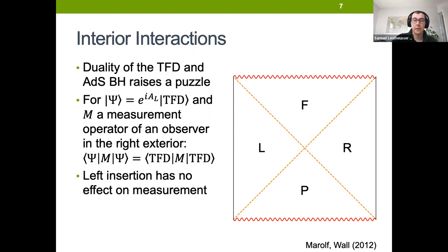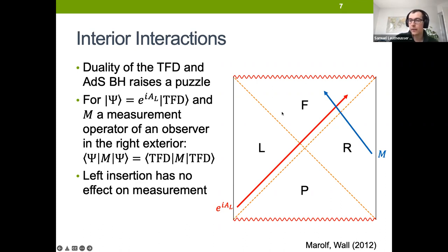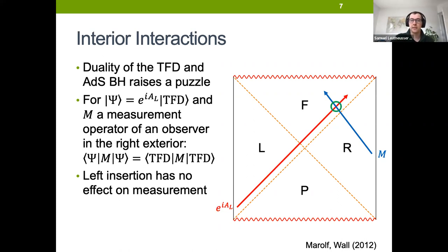This appears to be in conflict with the bulk picture. From the bulk picture, we expect that the insertion of a small unitary on the left side should have some effects in the left region, and those effects propagate into the future region. If I have an observer from the right falling into that future region, they can sense those effects and should be able to detect that this small unitary on the left was inserted. This puzzle was first raised by Maldacena and Wall — it doesn't directly lead to a contradiction, but it tells us that to describe observers falling into the interior, the description necessarily needs to include degrees of freedom on both the left and right CFT.